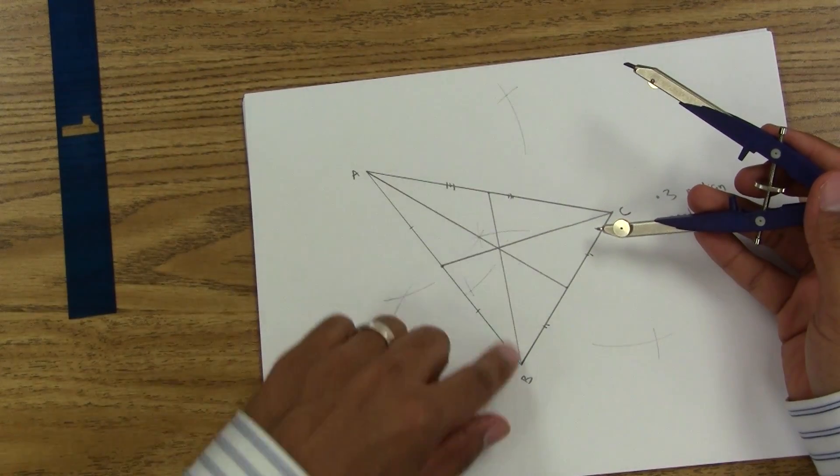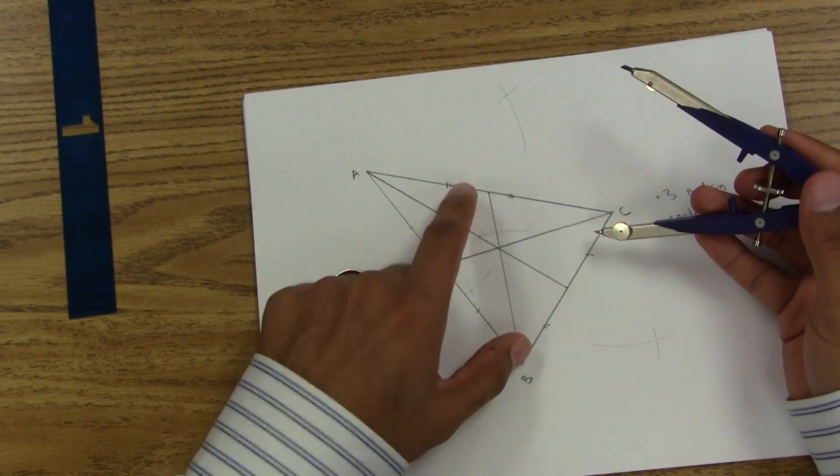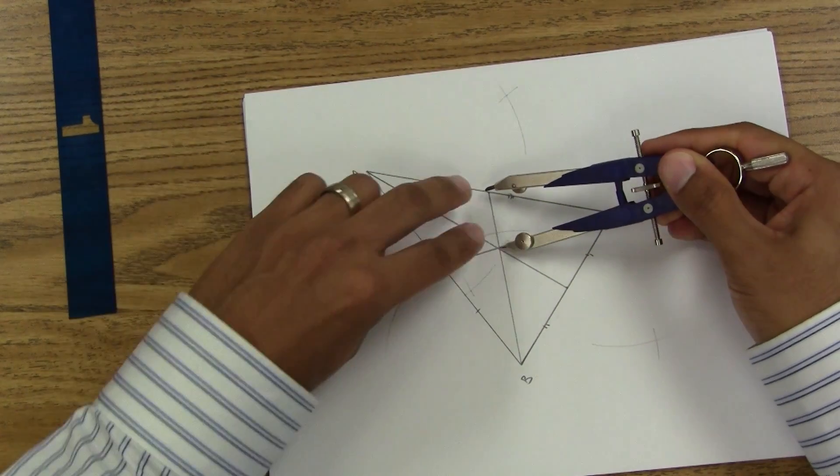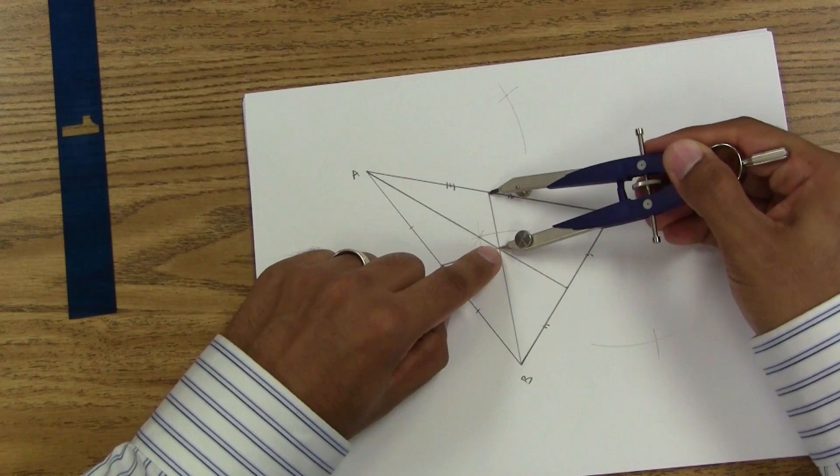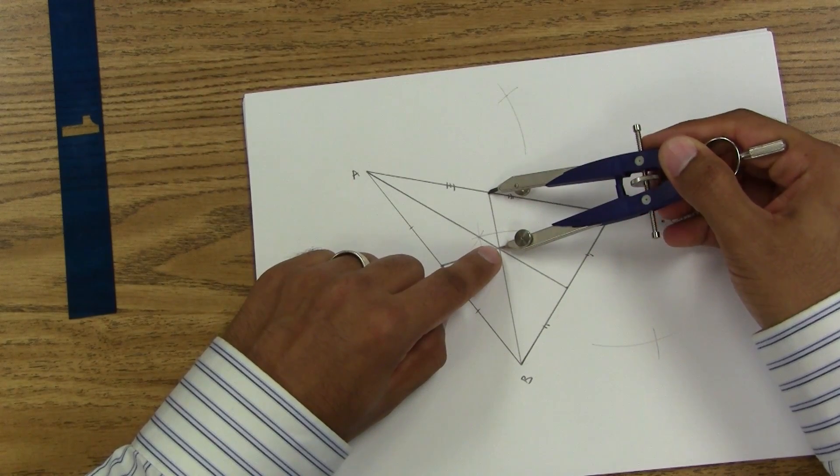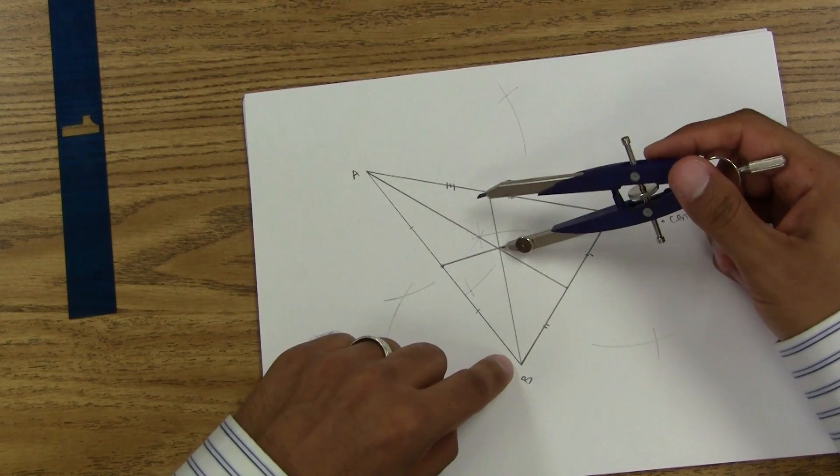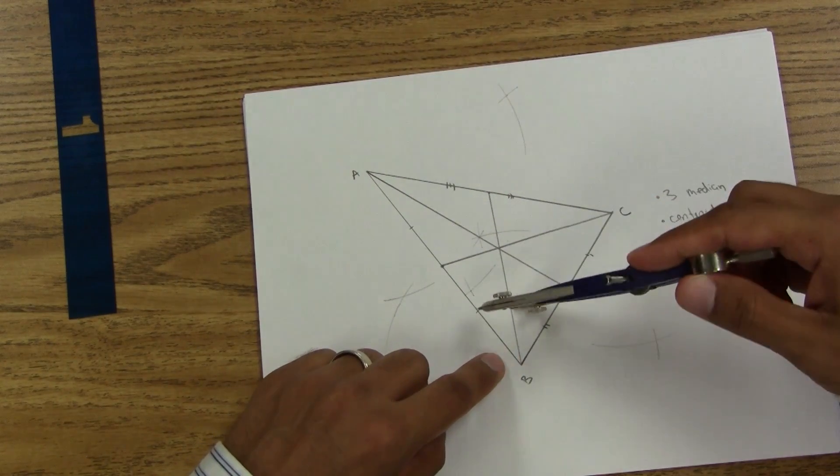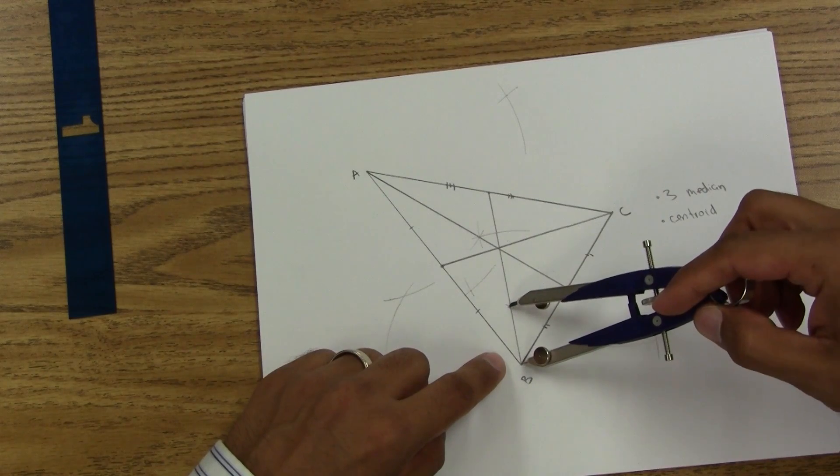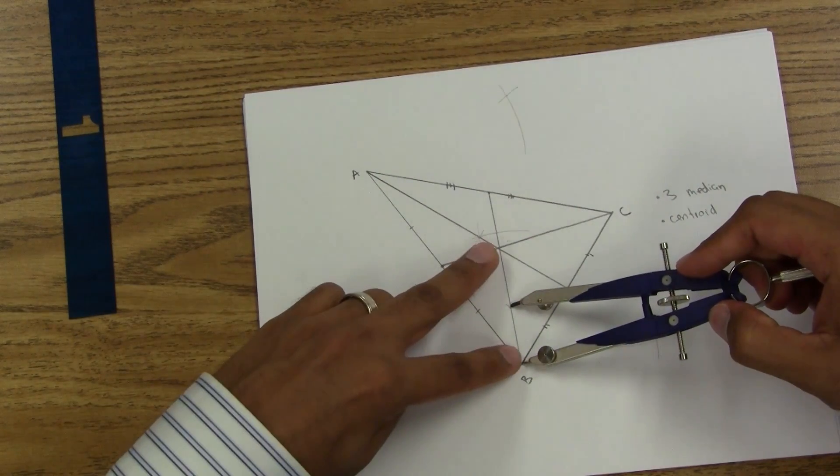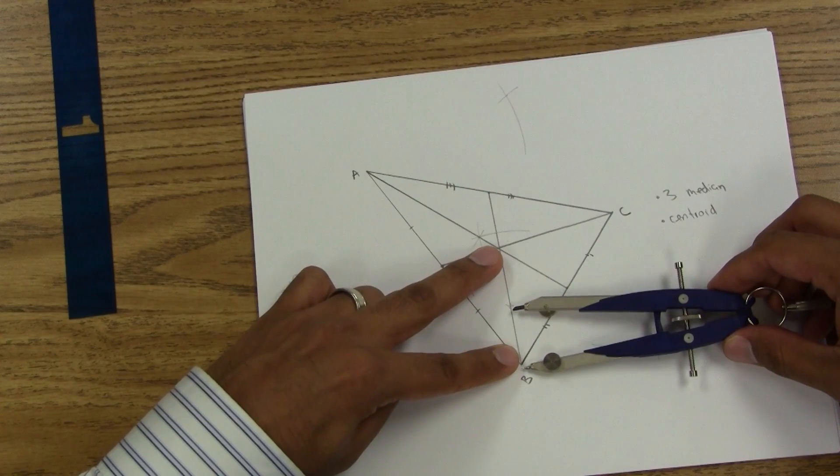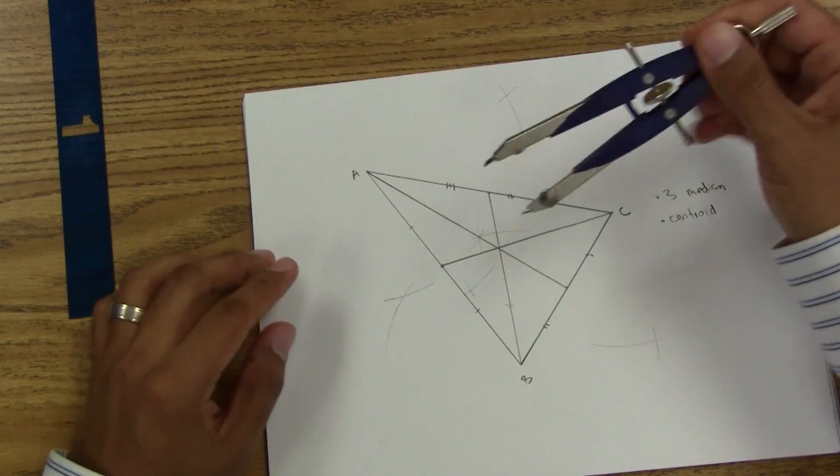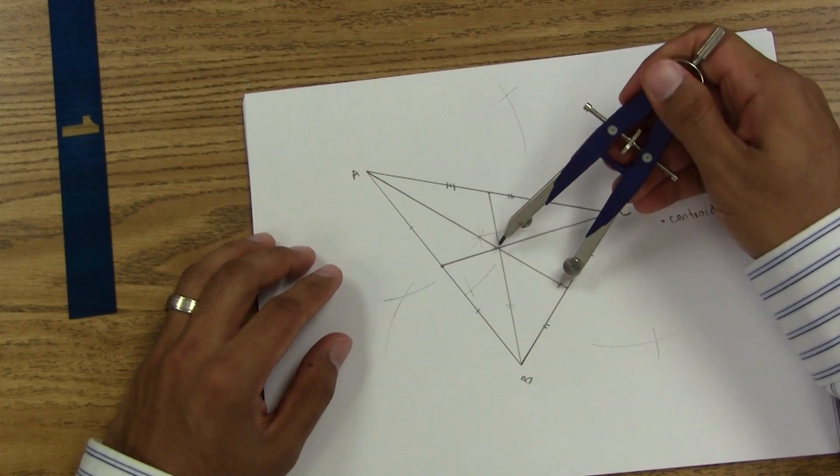If I only look at one line that I made, one of the medians, and I compare from the side to my centroid to the vertex, you'll notice that this part of the line is twice as long as this.